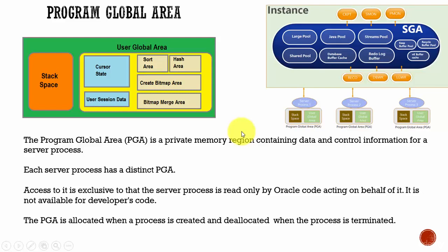In this session, let's learn about one important memory structure called Program Global Area. The Program Global Area is a private memory region which contains the data and the control information for a server process.